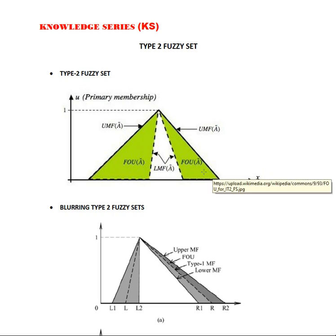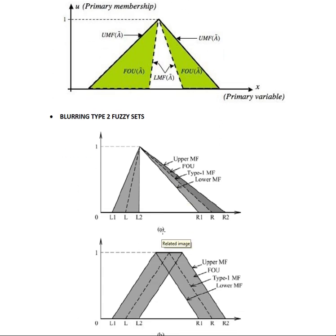With respect to Type 2 fuzzy set, we will be seeing certain activities with respect to this matrix. But before going to that, let us see how the Type 2 fuzzy set appears in a blurring scenario. When the blurring occurs, assume that this is a blurring area — it occurs from one point to the other point.